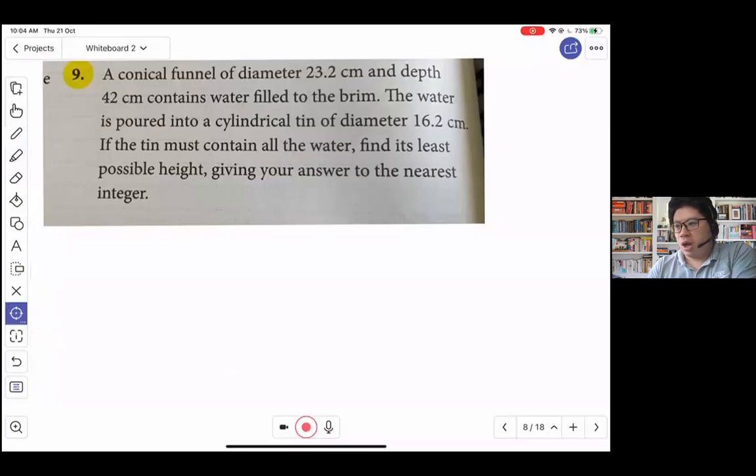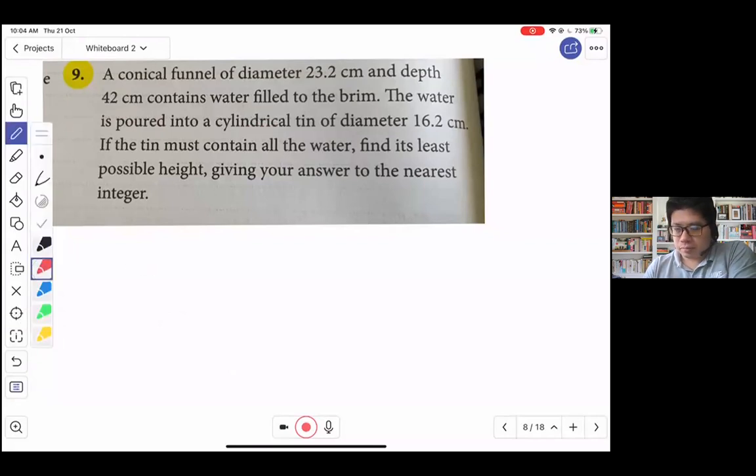So a conical funnel of diameter 23.2 cm and depth 42 cm contains water filled to the brim. We know that a conical funnel probably will look something like that - it's still a cone, just inverted.